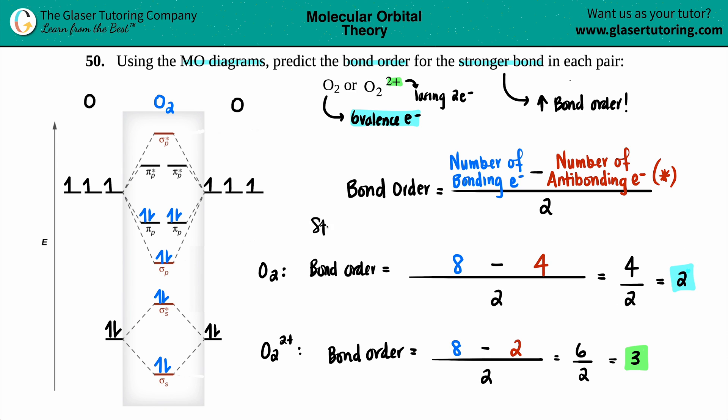So the stronger bond would be the one that's seen in O2 two plus. That would be a triple bond. Three, three lines. And that is your final answer.